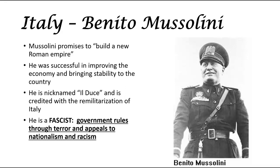In Italy, Benito Mussolini is going to rise. He becomes the prime minister of Italy and then basically takes control from there. He promises to build a new Roman empire for Italy and is very successful in improving the economy and bringing stability to the country through stimulus spending. He is nicknamed Il Duce and is credited with the remilitarization of Italy. He is a fascist, like Hitler, where the government rules through terror and appeals to nationalism and racism. Both Hitler and Mussolini are fascists and totalitarian — good vocab words to know for this unit.